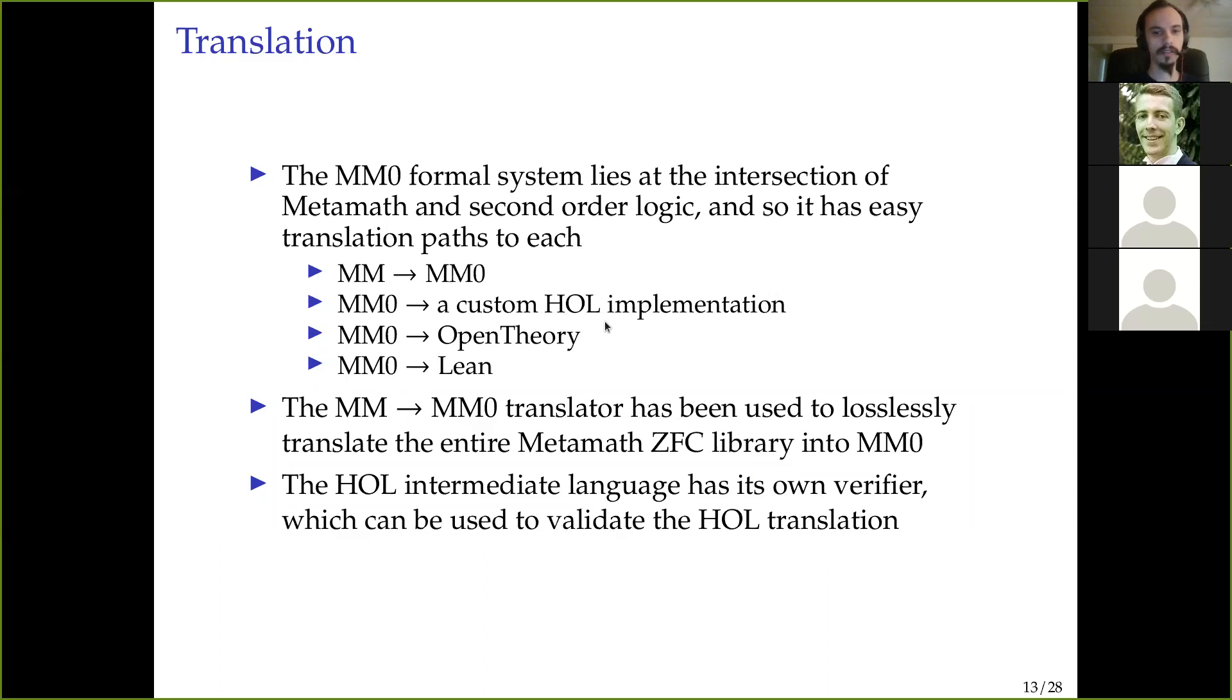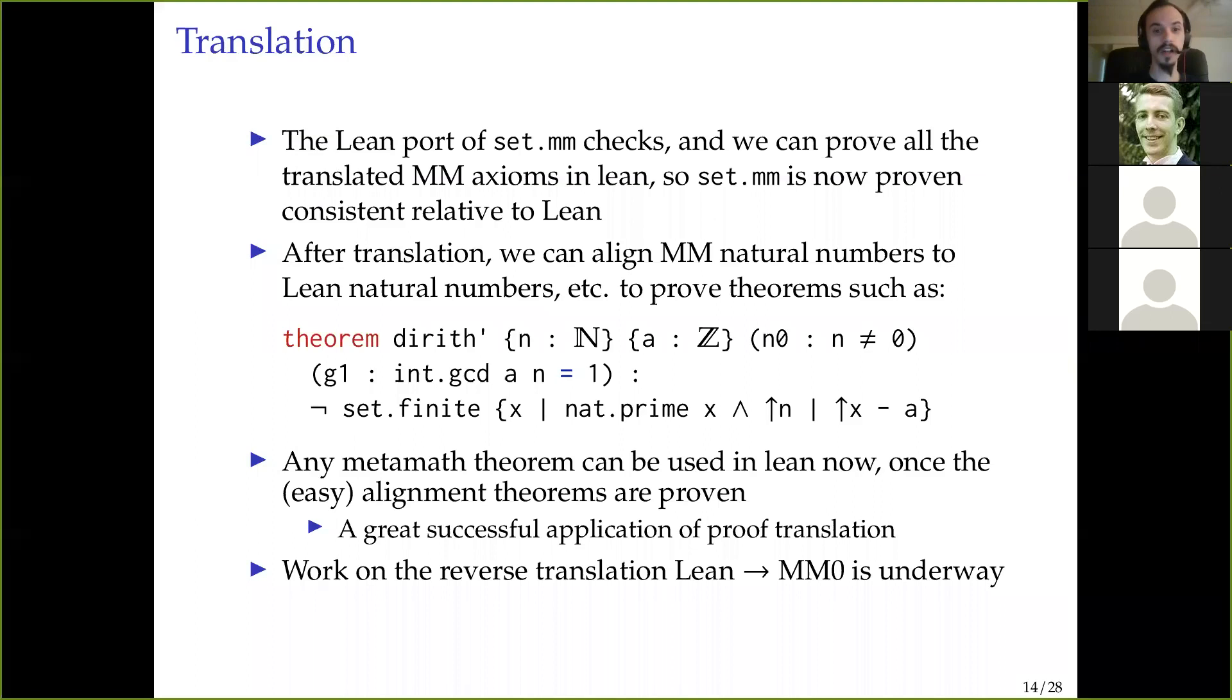Proof terms in the binary format are essentially fully elaborated and fully deduplicated terms. And as a result of that, you can get basically linear time verification. And the proof size is comparable to compiled proof formats in other languages, like MetaMath files or Olean files from Lean and VO files for Coq.